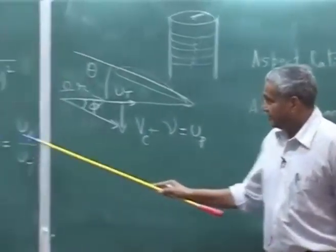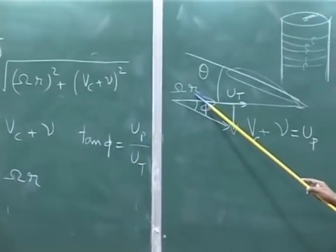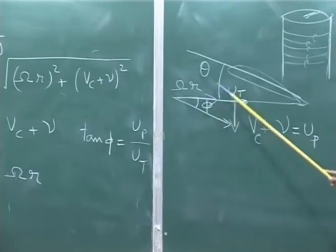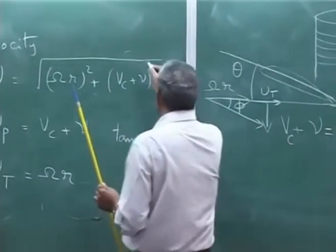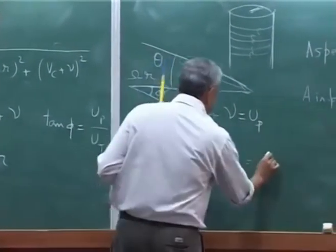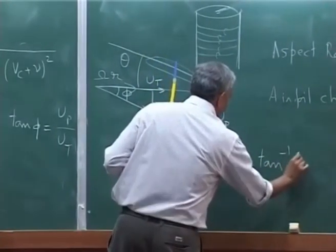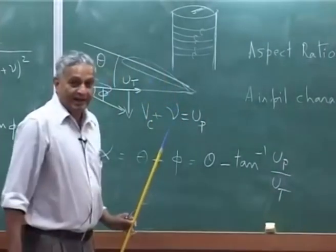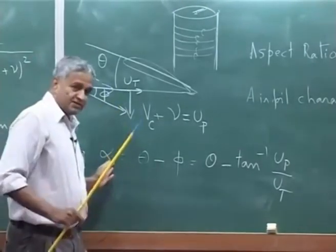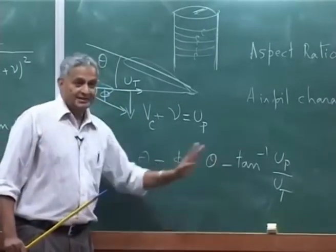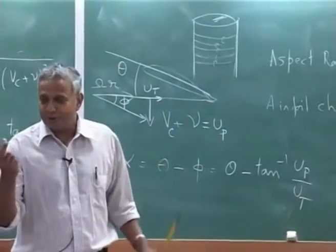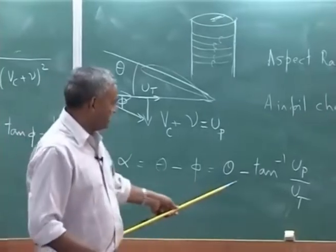Effective angle of attack: alpha = theta − phi = theta − tan⁻¹(u_p / u_t). Right at the definition of angle of attack, tan comes in. I now make an approximation: phi is small, so tan(phi) ≈ phi = u_p / u_t. Note that as r decreases near the root, phi becomes very large — I am violating this rule near the root — but I accept that error because dynamic pressure is very low there and lift is not very large.